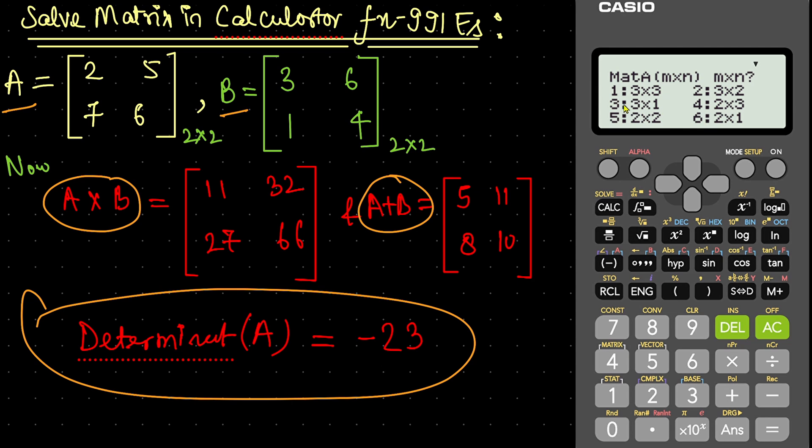It is 2 into 2 matrix. Press 5. Now, feed the matrix. Our A matrix is 2, press equal. 5, press equal. 7, press equal. And then 6, press equal. Now press AC.